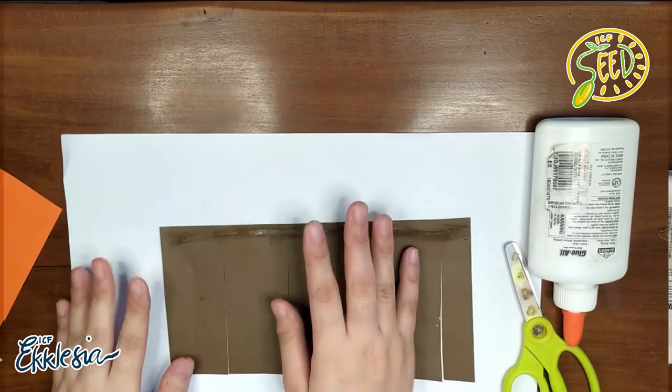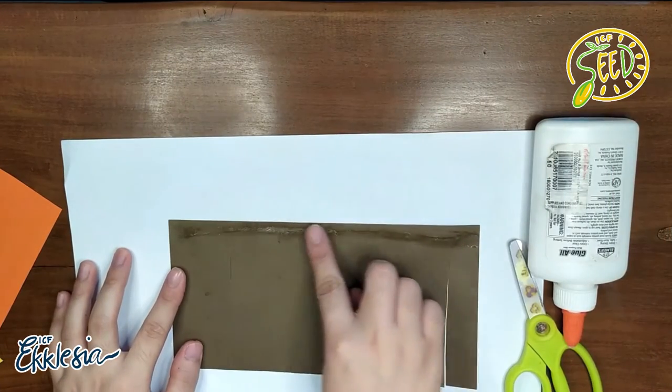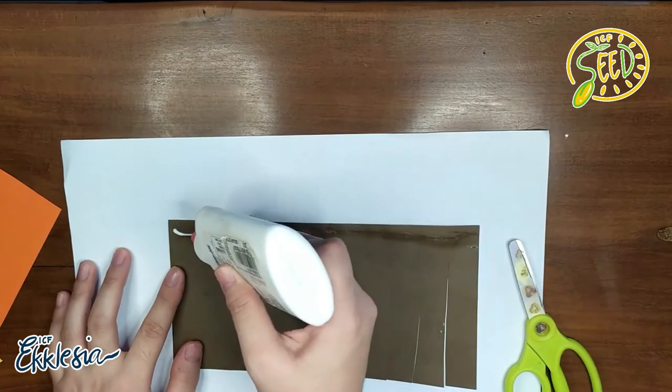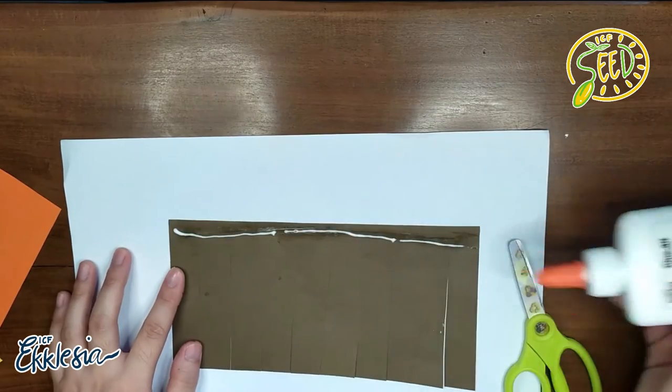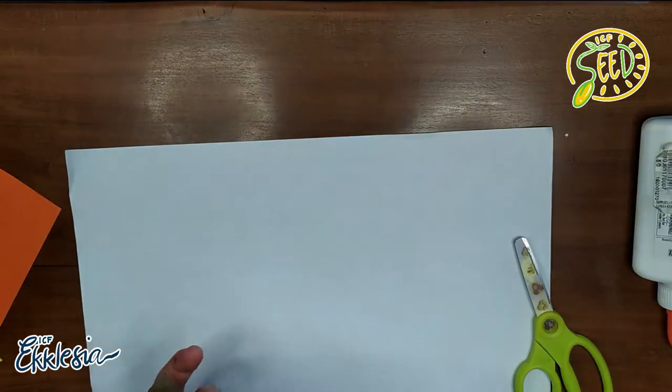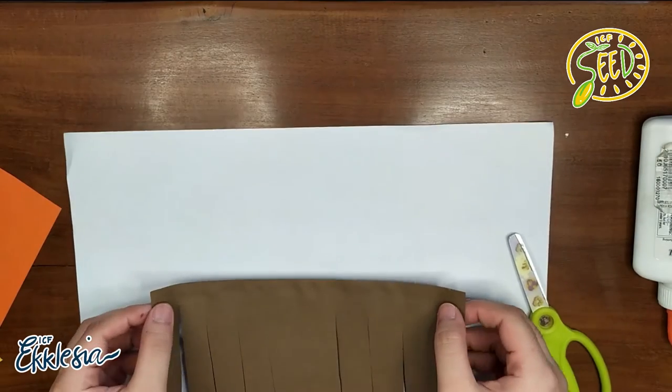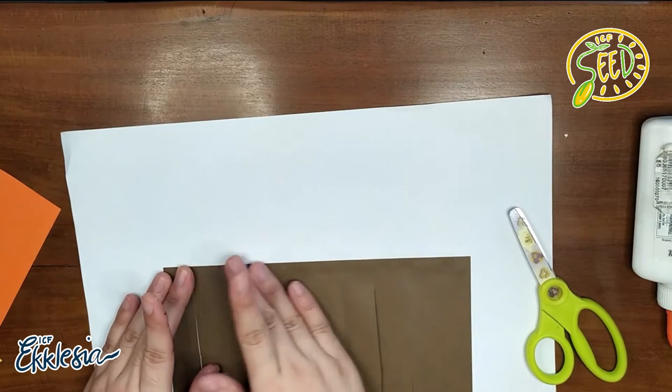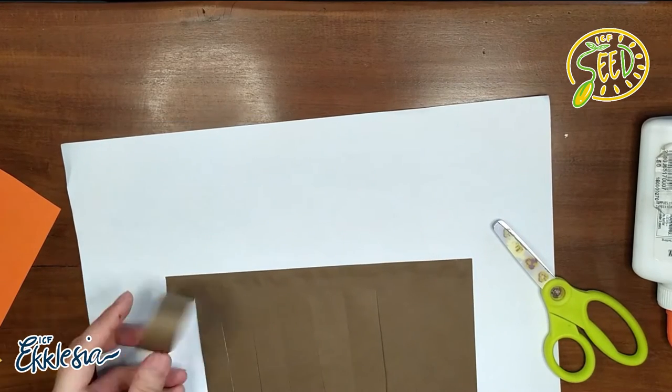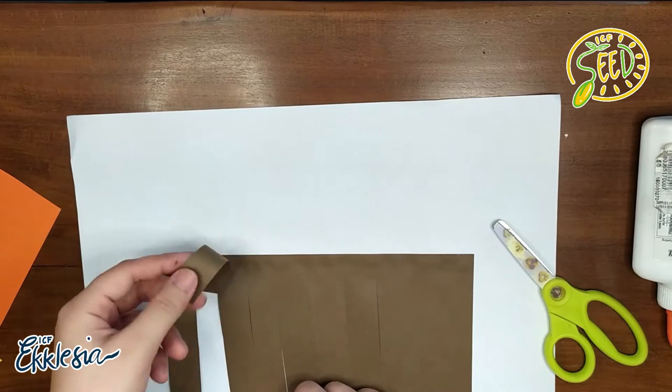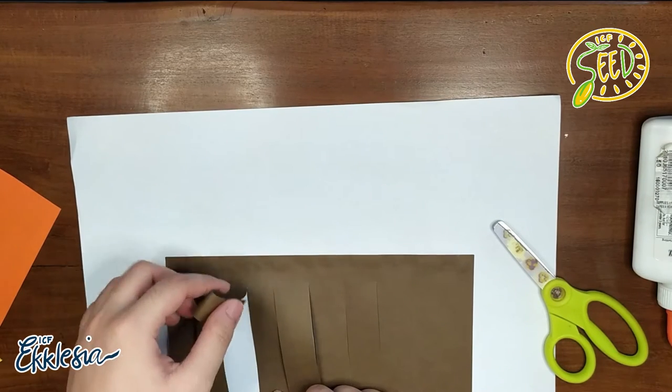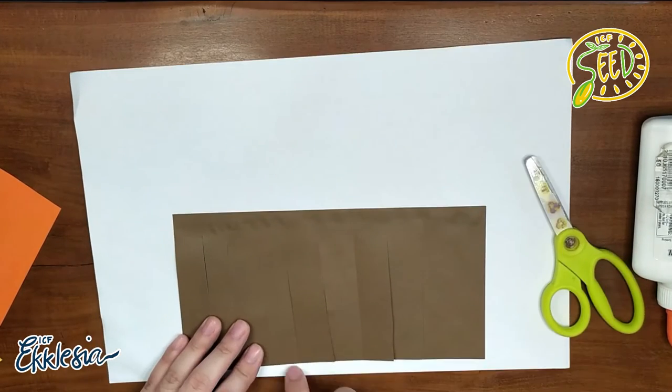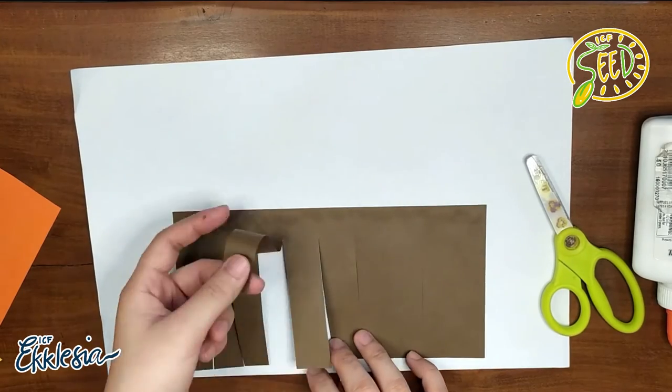Ngayon, dun sa top part, lagyan mo siya ng glue. Yung walang cut, yung walang gupet, lagyan mo siya ng glue. And, yun yung i-dedicate natin sa white or sa clean sheet ng paper. Tingnan nyo. Dapat, ganito ang kakalabasan niya. Parang may mga strips pa rin ng paper.